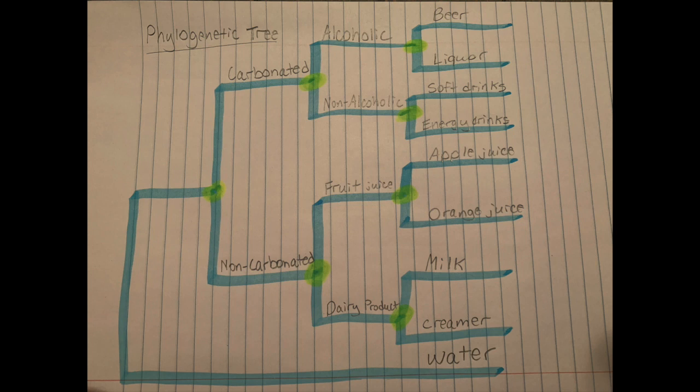And after analyzing the diagram, we can understand the relatedness between all the OTUs at each node, which is represented by the yellow highlighter. There is a common ancestor that divides into two OTUs.